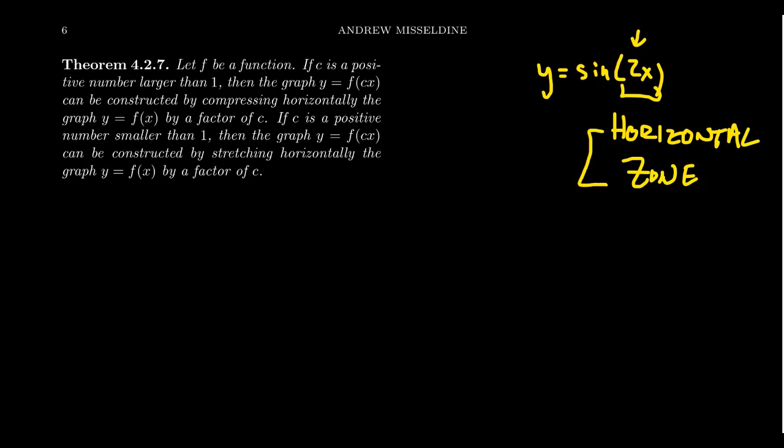But why do I make some connection to the twilight zone here? Well, because in the horizontal zone, things don't act the way you think they would. When it comes to outside the function, sticking a coefficient in front, like if you times by 2, that stretches it. If you times by 1 half, it shrinks it. It makes sense. Timesing by something big makes it get bigger. Timesing by something small makes it get smaller. But in the horizontal zone, things act backward.